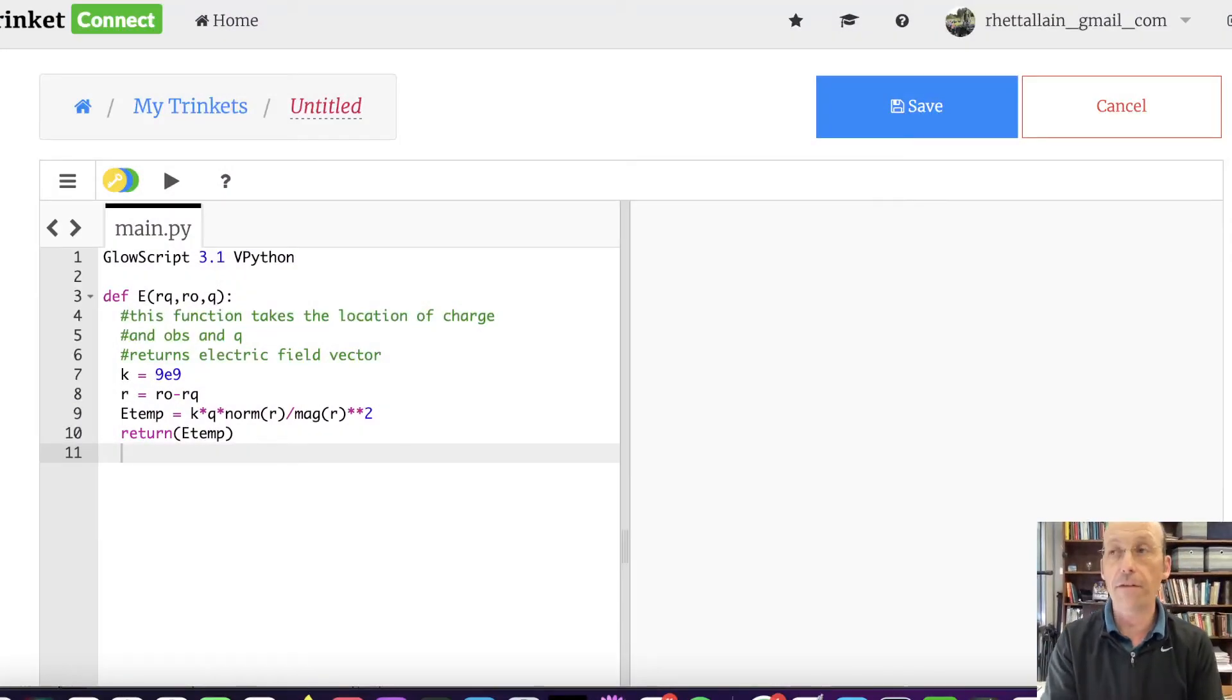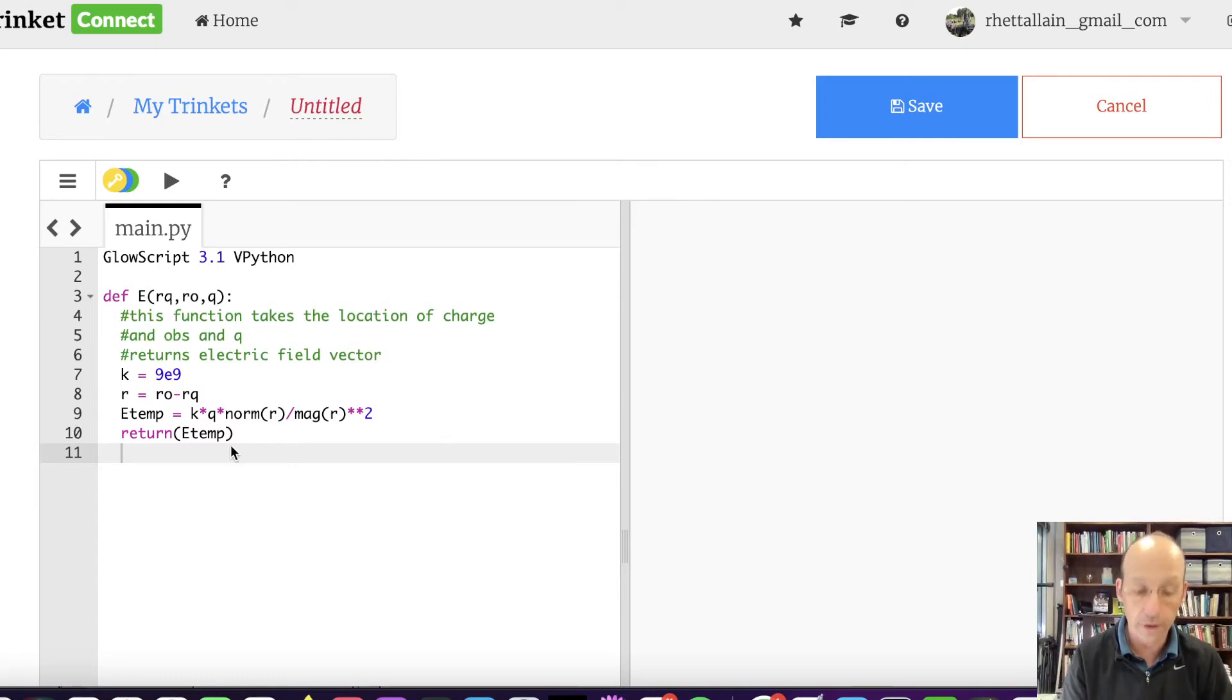Okay, so here I already have my function that I had from before for calculating the electric field due to a point charge. Let's go ahead and make my dipole. So I'm going to say Q is just going to be equal to 3 nanocoulombs, 3e-9, and then I need S. S is going to be equal to 0.001 meters, a millimeter.